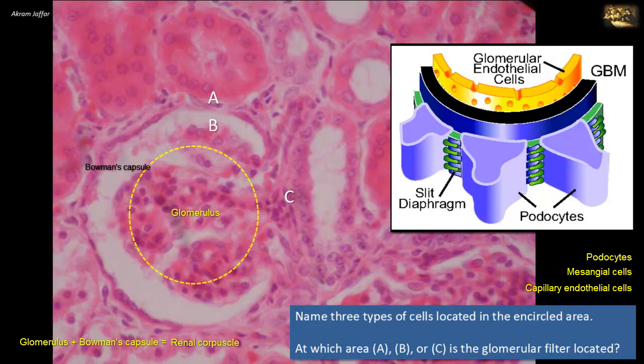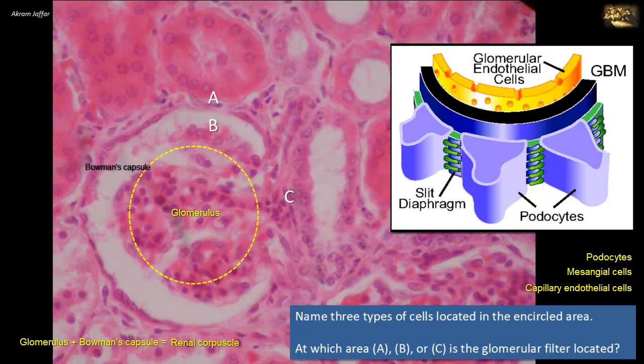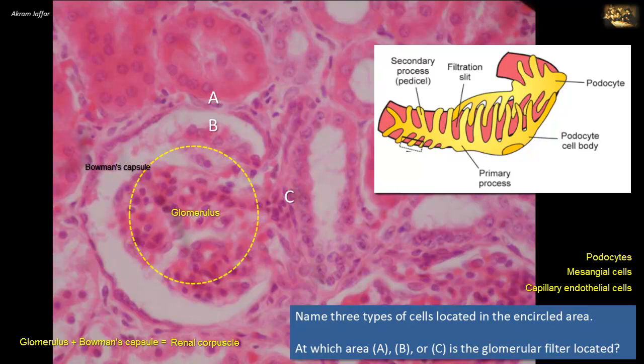Regarding the basement membrane, smaller molecules pass freely whereas larger molecules are retained. The third component is formed by the podocytes which envelop the glomerular capillaries. These podocytes have long cytoplasmic primary processes which give rise to short secondary foot processes, or pedicles, which interdigitate and are directly applied to the glomerular basement membrane. The gaps between the interdigitations of the secondary foot processes are called the slit pores, which restrict the passage of large molecules.